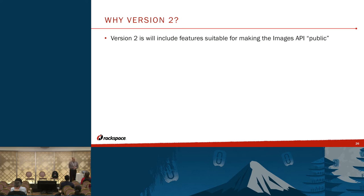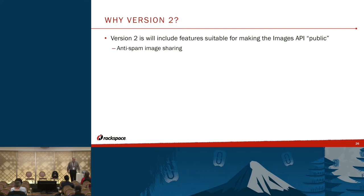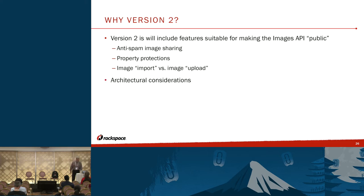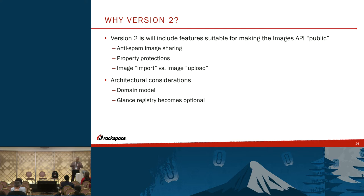There were also architectural considerations. V1 is designed to use the Glance registry, which introduces an extra layer between the images API and the database with additional complexity and not much payback. The idea with version 2 is that it includes features suitable for making the images API public — Glance got split off from Nova and was really designed for Nova to use, so if people are going to use it, work needs to be done. With V2, a new domain model was introduced consistent with modern software engineering practices, and the Glance registry becomes optional, so the V2 API can deal directly with the database.